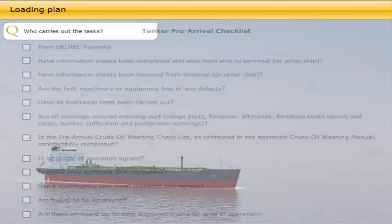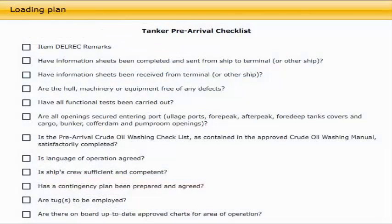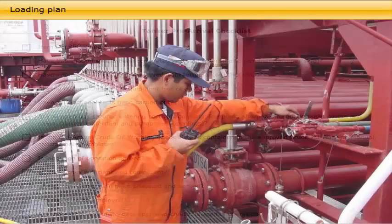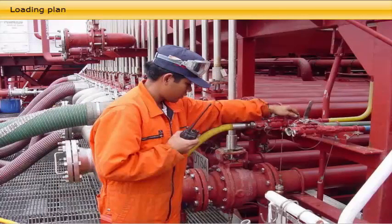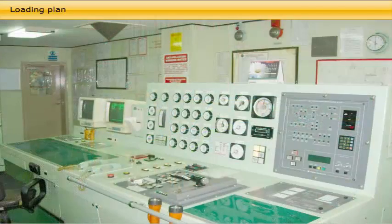Who carries out the tasks? The pre-arrival checklist is a comprehensive record of preparations carried out in order to document that the vessel is arriving in a condition according to the company's policy and international rules and regulations. All junior officers, including the pumpman and bosun, as well as the engine officers and crew, will be engaged in testing and checks in order to complete the pre-arrival checklist. In the engine department, all the technical systems required by the checklist are to be tested and the result reported back to the chief officer.